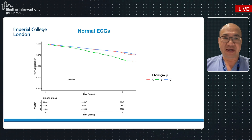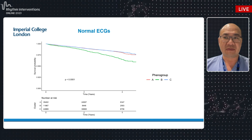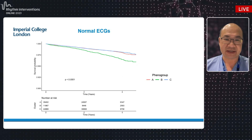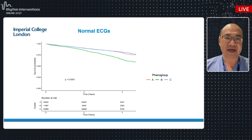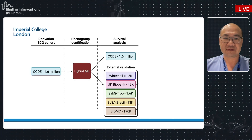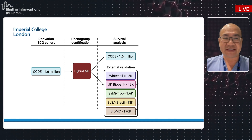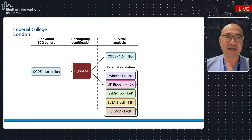Importantly, even in ECGs labeled as normal by physicians — that is, an EP or cardiologist saying this is a normal ECG — the model is still able to pick out high-risk features in what supposedly appears to be a normal ECG.